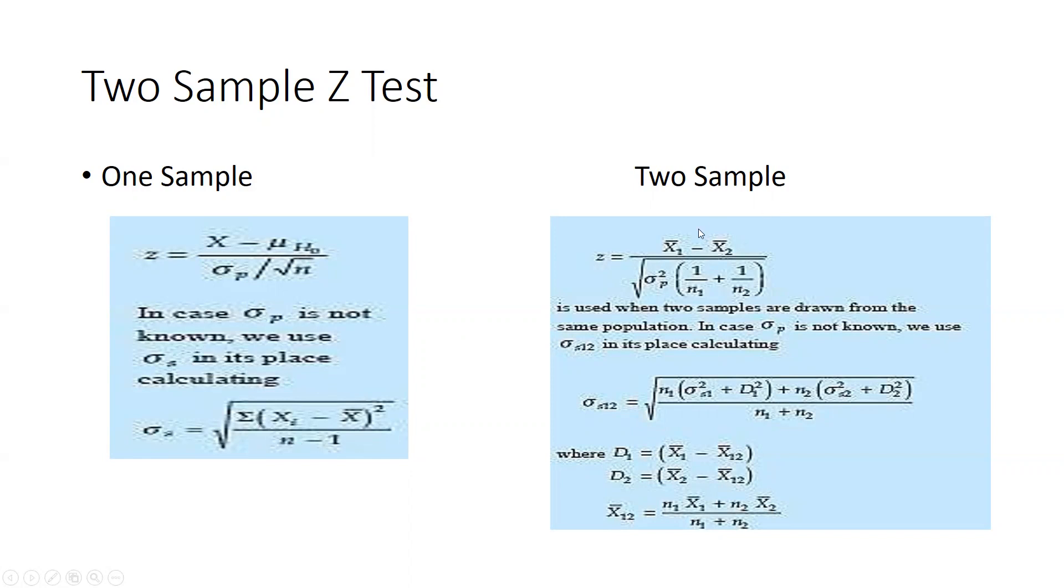But when we talk about two sample: x̄₁ minus x̄₂. Here you can see σₚ² (p stands for population) 1/n₁ plus 1/n₂ is used when two samples are drawn from the same population. In case σₚ is not known, we use σₛ² in its place. This would be the formula how we are going to calculate σₛ² for sample 1 and sample 2.